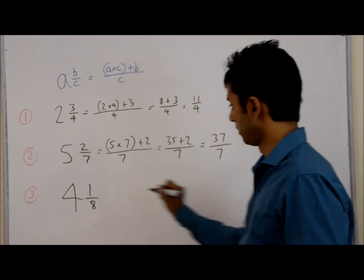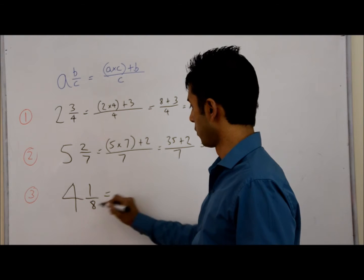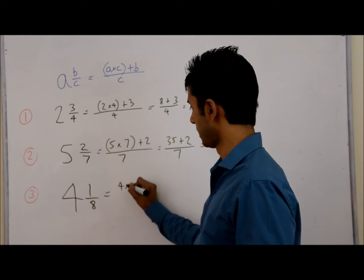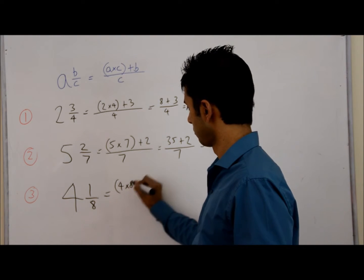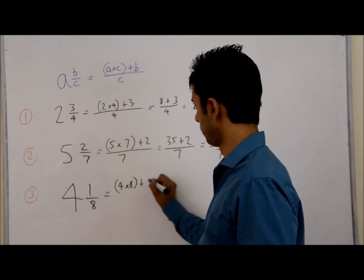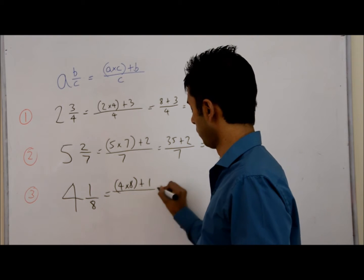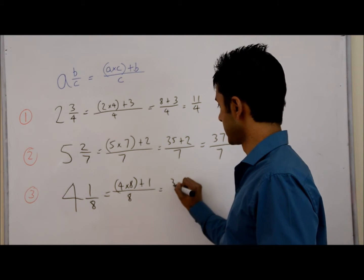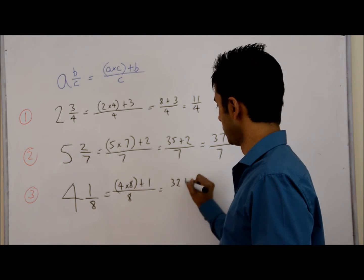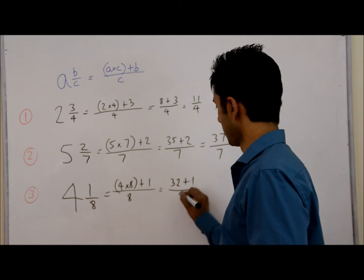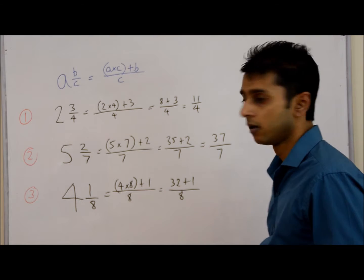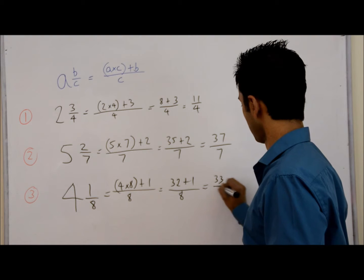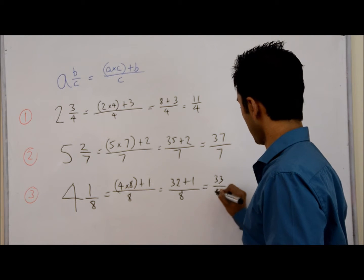And the last one: 4 and 1 eighths. So we do 4 times 8 add the 1, all over 8. That's 4 times 8 is 32, plus 1 over 8. 32 add 1 is 33 over 8.